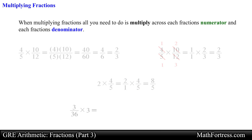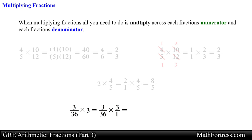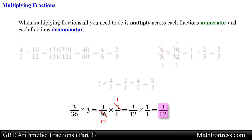Let's end the video with the final example: 3 over 36 times 3. We write 3 as a fraction by including 1 in the denominator. Next, we can simplify the numerator of the right fraction with the denominator 36 of the left fraction, since both 3 and 36 have a common factor of 3. Dividing 3 and 36 by 3 gives us 1 and 12. We then multiply the fractions — any number multiplied by 1 is itself — obtaining 3 over 12. This fraction can be further simplified by dividing both numerator and denominator by 3, giving the final answer equal to 1 fourth.